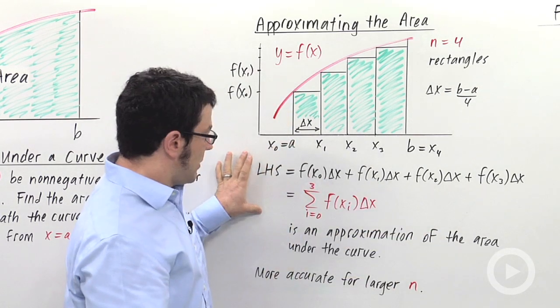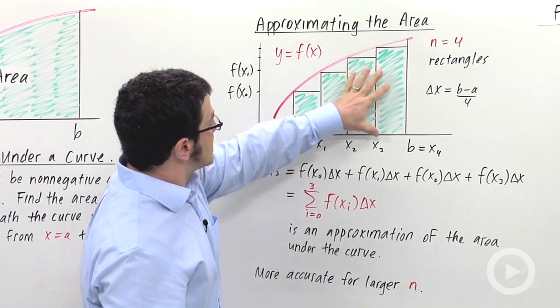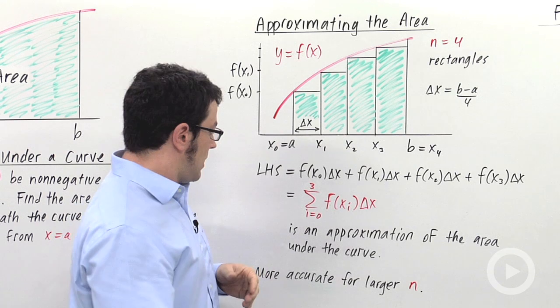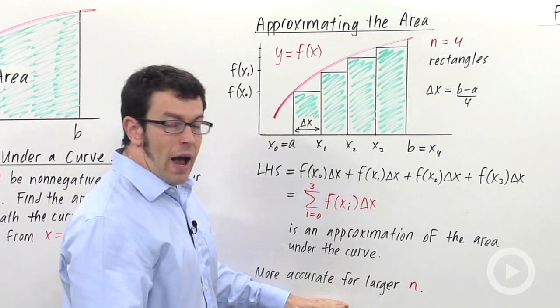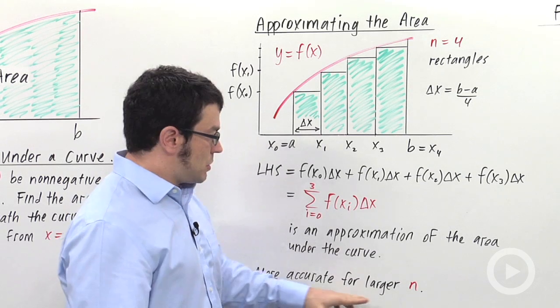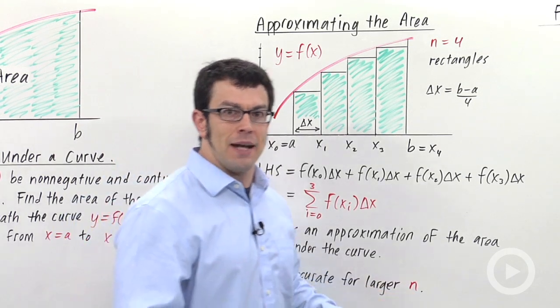This is the left-hand sum, and it's an approximation of the area under the curve. And as you can see, this left-hand sum gives me an underestimate. Now, as you might imagine, this sum gets more accurate the more rectangles we use. So as n gets larger, we get more and more accuracy. Now let's see how to make this exact.